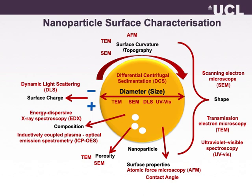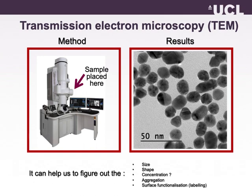Transmission electron microscopy, TEM, is widely used to look at the morphology of nanoparticles. It can tell us about size, shape, aggregation, or surface functionalization of your nanoparticles. Sometimes, if you know the amount of fluid you added to your copper grid, you can also calculate the concentration of your nanoparticles. I work with gold nanoparticles and they are electron dense, so TEM is a great method to visualize them. I use TEM for size distribution analysis for the core size of nanoparticles.